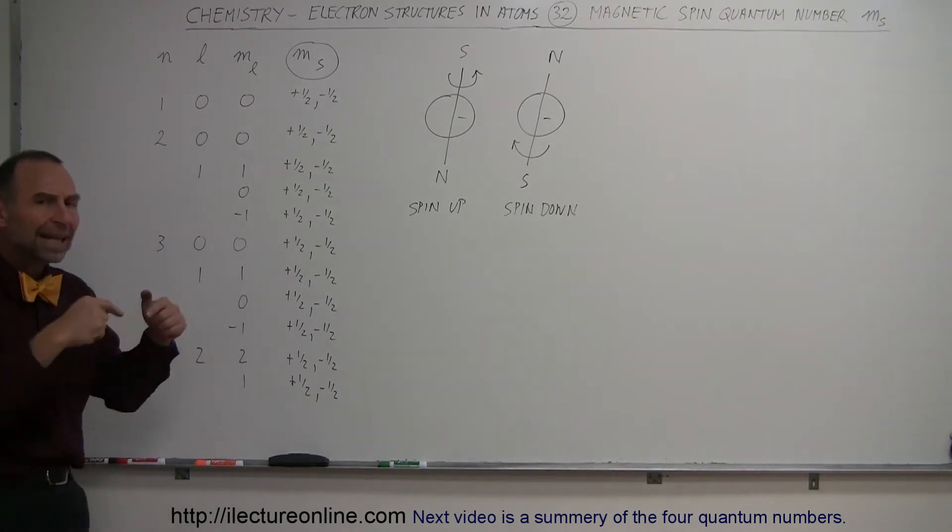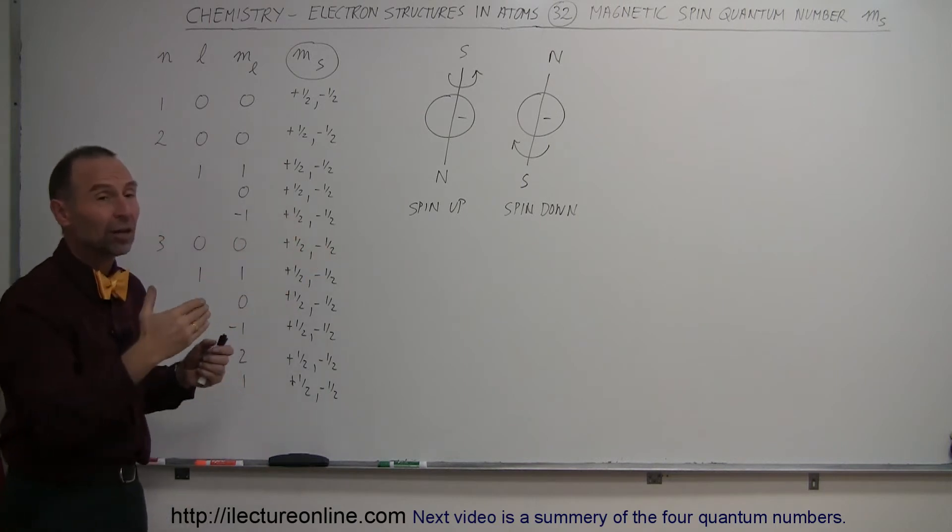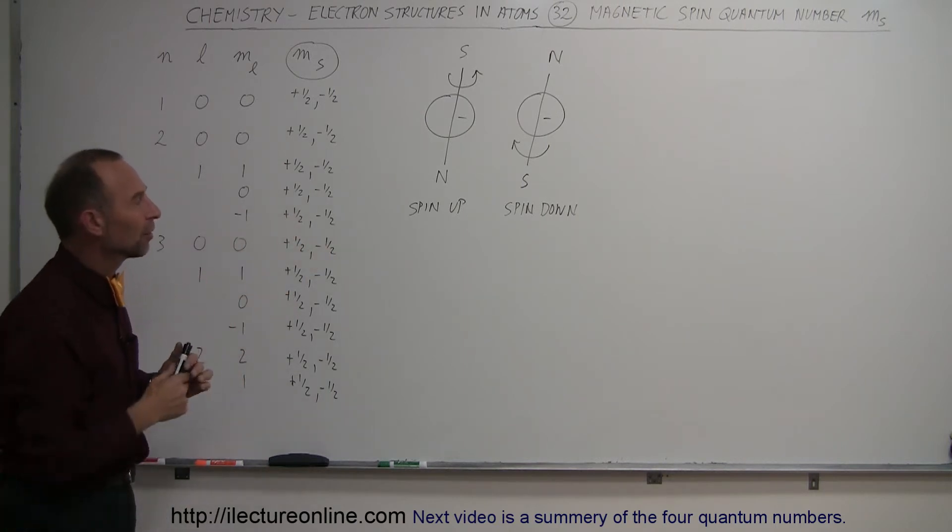Of course, those magnetic fields interact with any other magnetic field that may be present, and so there would be a slight energy difference in the direction of the spin of the electron, depending upon the external influence of the magnetic field.